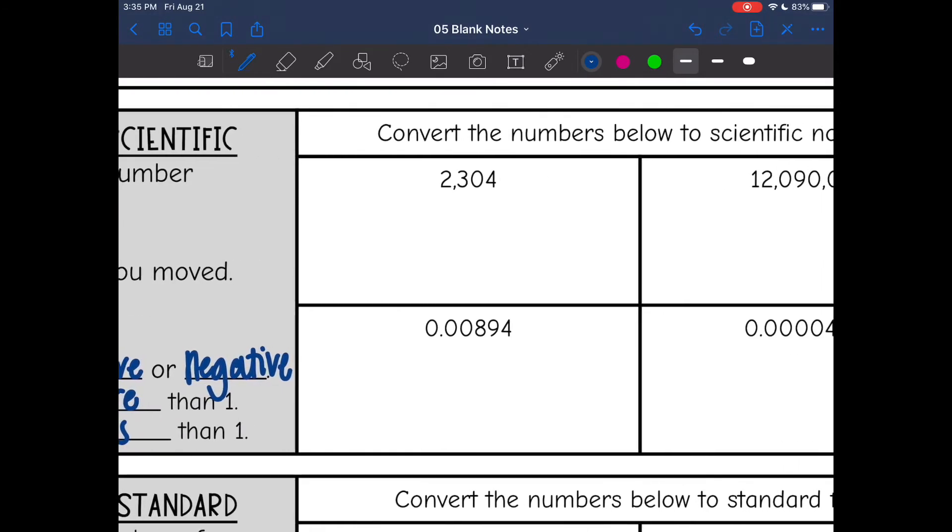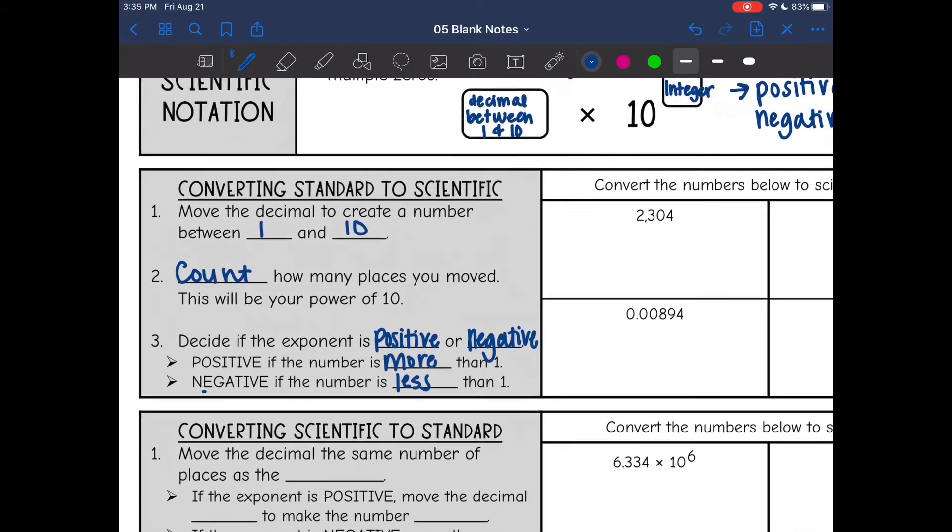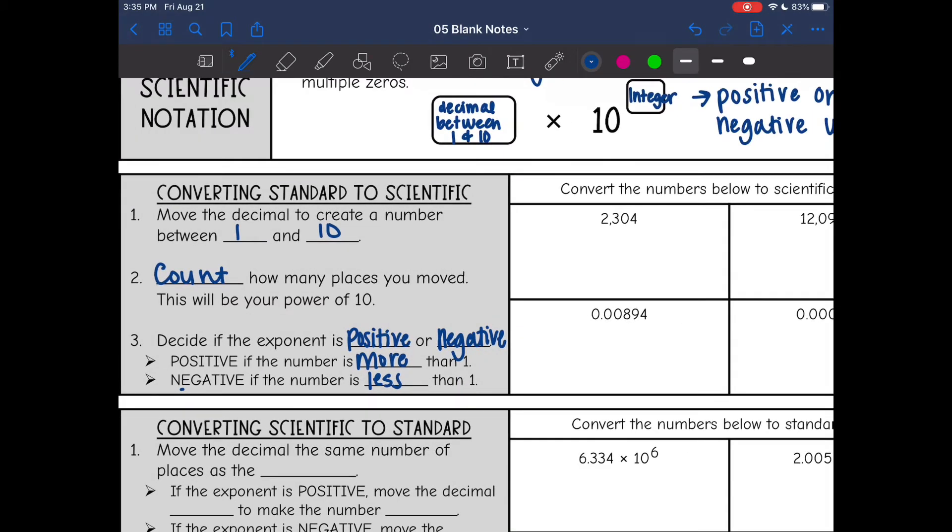All right, so let's look at this first one and go through the steps. So step number one was to create a decimal between one and 10. So currently, the decimal point is right here, I would need to move it between the two and the three to make it between one and 10. So I'm going to go ahead and write out my new decimal. 2.304. And now I'm going to count how many places I moved. And I moved one, two, three places.